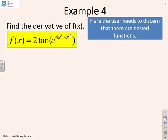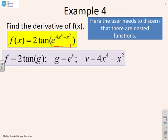This example is even worse. f of x is 2 tan e to the 4x to the 4 minus x squared. So clearly there's some form of function going on inside here. So I need to define it for myself. I'm going to define f as 2 tan g, g as e to the v, and v as 4x to the 4 minus x squared. So I've broken this function down to be a nesting of three separate functions.